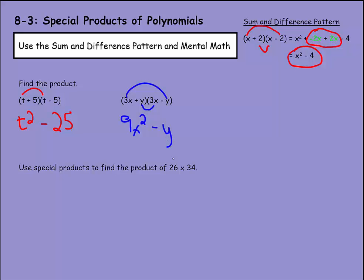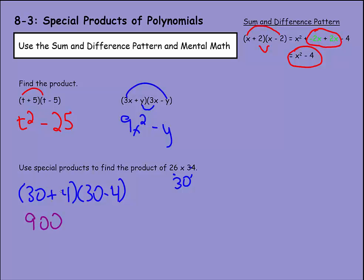We can also use this with numbers — for example, 26 times 34. Notice that 26 and 34 are both 4 away from 30, so we can write this as (30 + 4)(30 − 4). Then 30 times 30 is 900, the middle terms cancel, and positive 4 times negative 4 is −16, giving 900 − 16 = 884. The sum and difference pattern saves a lot of time, and eventually you'll do it mentally very quickly.